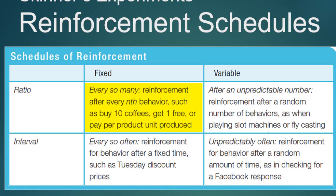A fixed ratio means reinforcement happens after a set number of responses. For example, if you're a car salesman and get a bonus for every five cars you sell, you know it's every five times. You work hard to reach that fifth one, and behavior increases the closer you get to that fixed number.